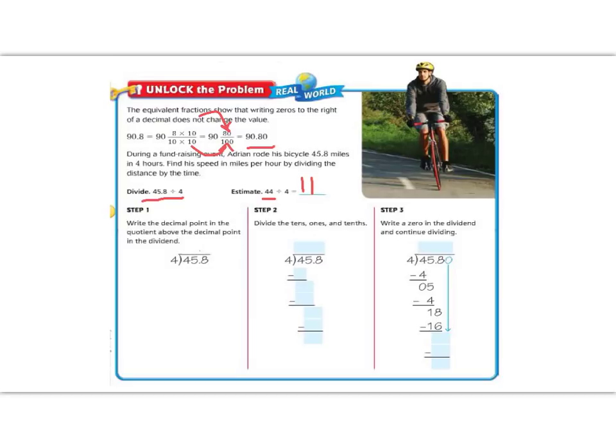Now let's begin with the steps. Step 1 says write the decimal point in the quotient above the decimal. So we're going to write it straight up. Now step 2, let's go ahead and divide. 4 goes into 4 one time, which is 4. Subtract and we get a 0. Then we bring down the 5. 4 goes into 5, I'll put my decimal, one time, which is 4.